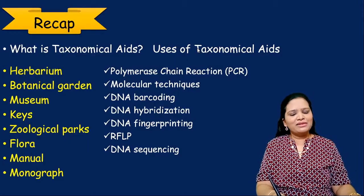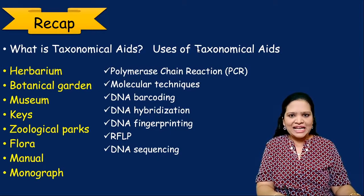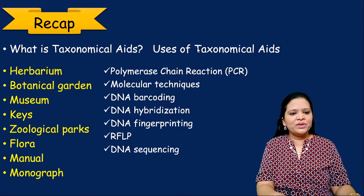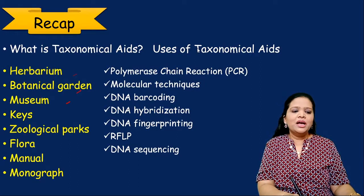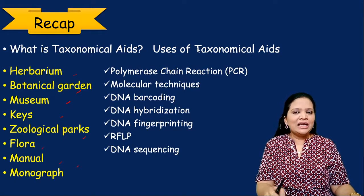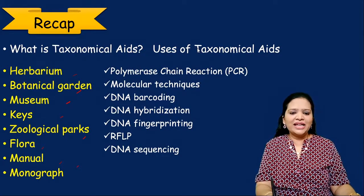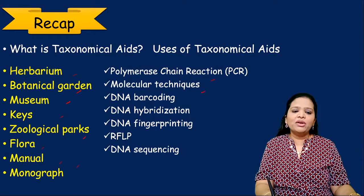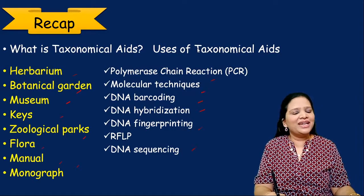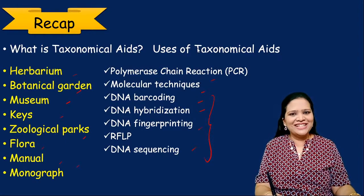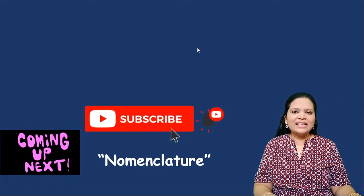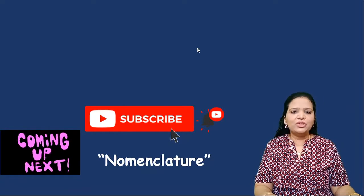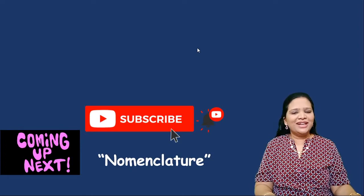To summarize: we studied what taxonomical aids are and their uses. Classical taxonomical aids include herbarium, botanical garden, museum, keys, zoological parks, flora, manuals, and monographs. Modern molecular taxonomical aids include DNA barcoding, hybridization, fingerprinting, RFLP, and DNA sequencing. Our next lesson will be about nomenclature. If you liked this lecture, give a thumbs up, share it with your friends, and subscribe to our channel NEET Biology Expert. See you in another lecture. Thank you.